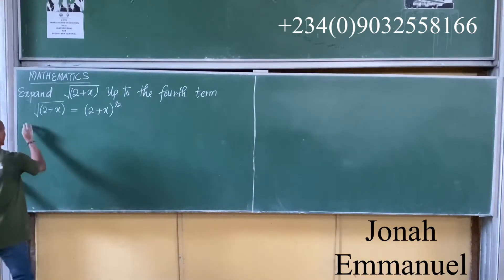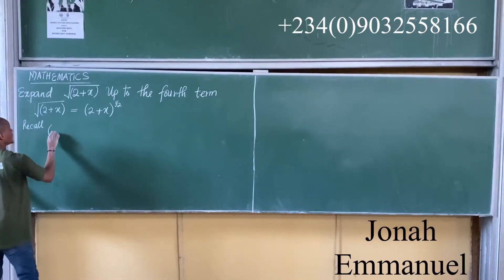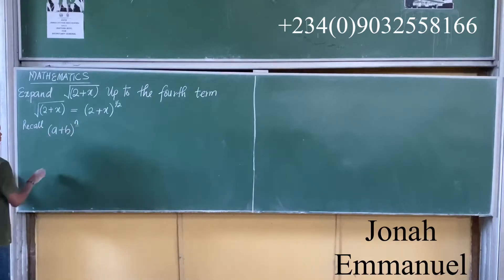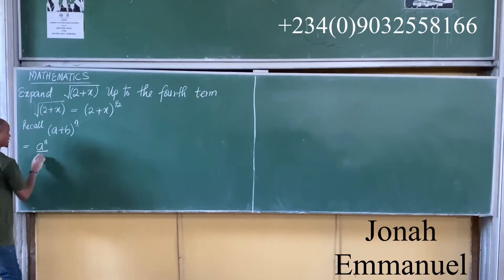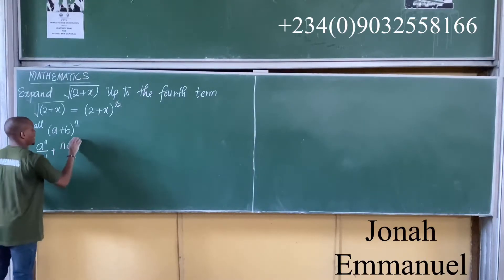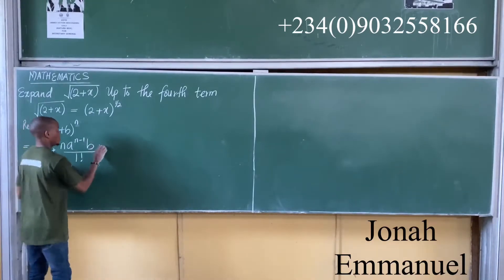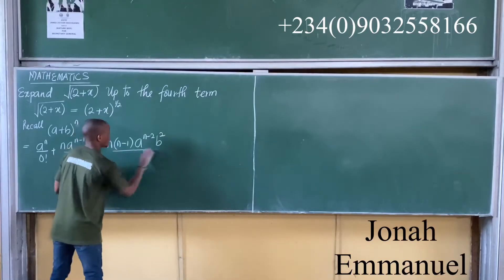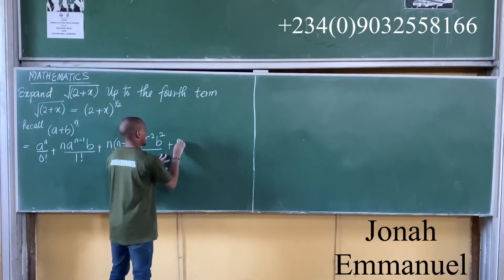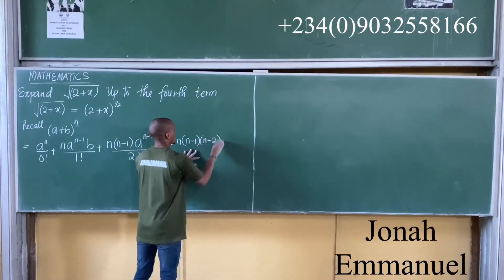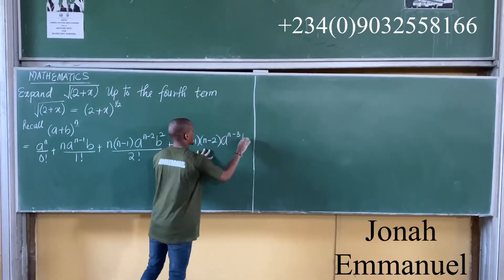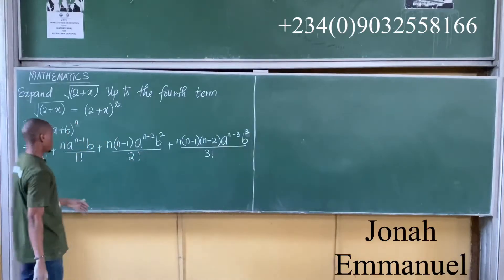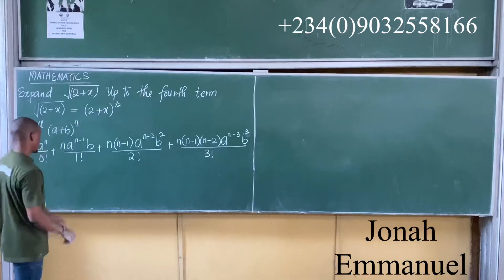We could recall the formula. Recall that if you have a plus b to the power n, such that n is an irrational index, we set this equal to: a to power n over 0 factorial, plus n times a to power n minus 1 times b all over 1 factorial, plus n times n minus 1 times a to power n minus 2 times b squared all over 2 factorial, plus n times n minus 1 times n minus 2 times a to power n minus 3 times b cubed all over 3 factorial. This is to 4 terms.